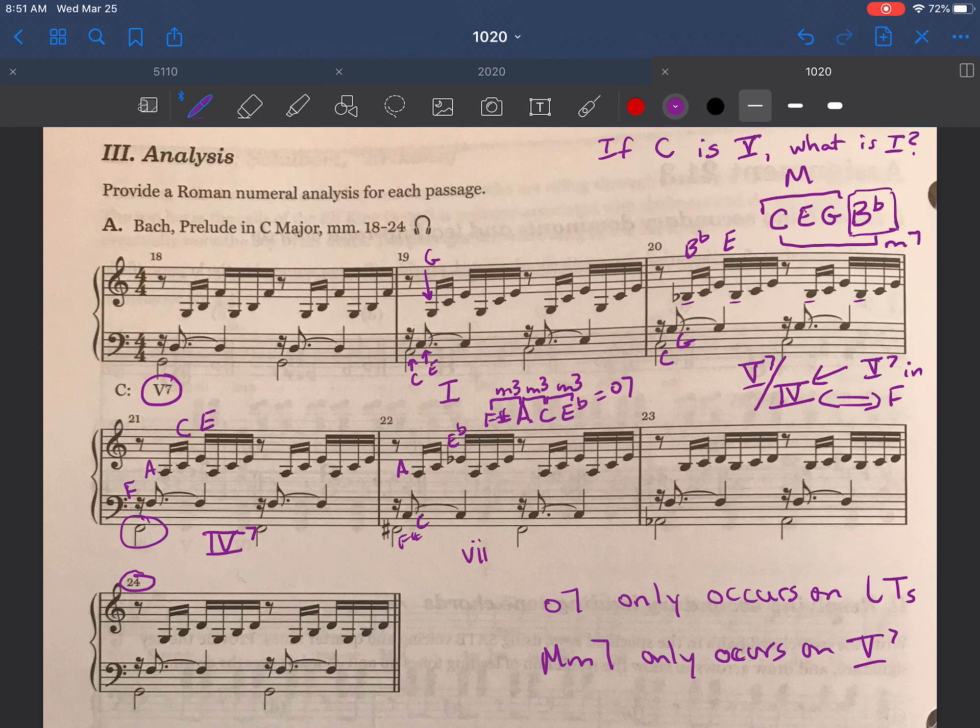So this is a fully diminished seventh chord. So I know that this is seven diminished seven of something. The root is F sharp. So I need to ask myself if F sharp is the leading tone, what is tonic? F sharp is the leading tone. I go up a half step from there to find tonic. F sharp is the leading tone of G. And G is five in my key. So this is a seven diminished seven of the key of G, which is five.